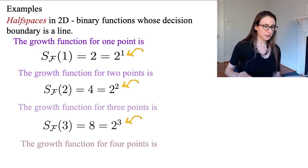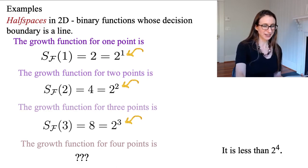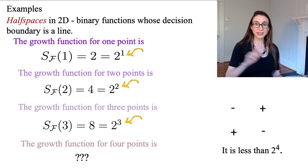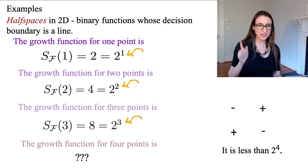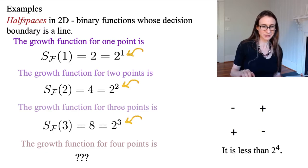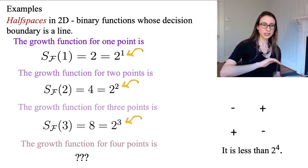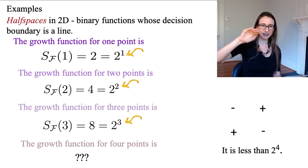What's the growth function for four points? You might guess 2^4, but it's actually less than 2^4. No matter what configuration you put the points in, you can never classify them such that the diagonal points are in one class while the other two are in the other class. So you can never achieve all possible classifications of four points. The growth function seems to increase exponentially at first and then flattens out — for five points it's definitely not 2^5.